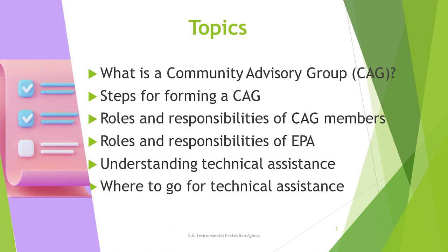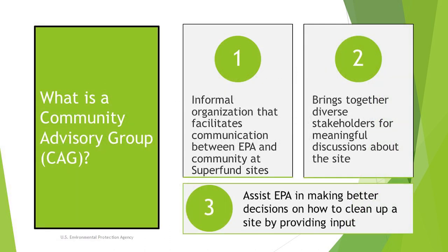A community advisory group, or CAG, is a self-organized informal group that serves as a forum to exchange information between the EPA, other government agencies, and the local community. The main purpose is to address community questions, interests, and concerns about the cleanup of a Superfund site.